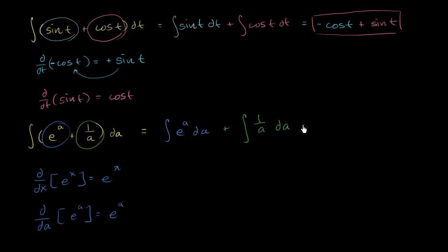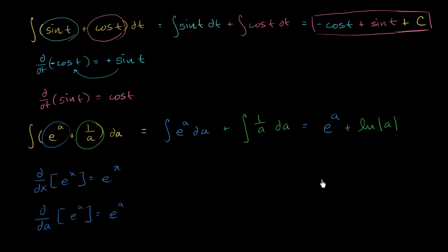Let me not forget — I have to put my constant right over here. Always remember the constant — I almost forgot. So the antiderivative of e to the a is e to the a plus a constant. And the antiderivative of 1 over a is the natural log of the absolute value of a, and there could be a constant factor here as well. And we are done — we found the antiderivative of both of these expressions.